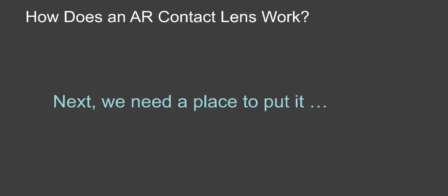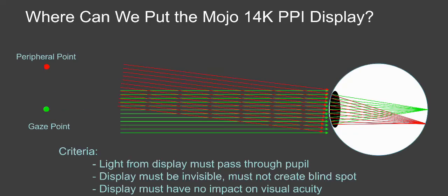So that's great. We have a really tiny display, but where can we put it? We need to put it someplace where the light from the display can go through the pupil so you can see it. But the display itself has to be invisible. It can't block your vision. It can't create a black blind spot right in the middle of your vision. And the display can't impact your visual acuity.